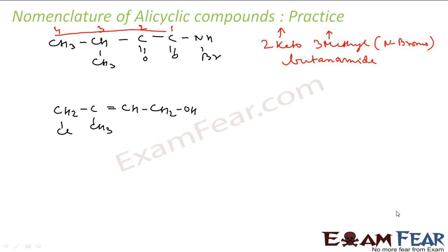Let's try to name this compound. So it has an alcohol group. This is the highest functional group in this case. So this is my longest chain of carbon with a double bond. My numbering will start like this because it should be nearest to OH — OH should get the least number. This is my numbering.